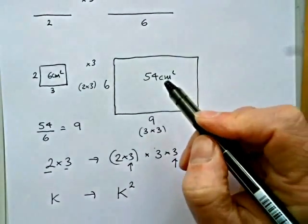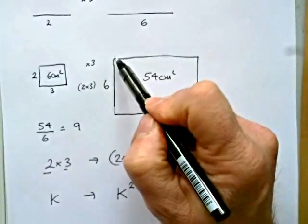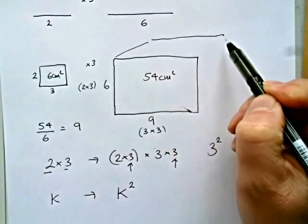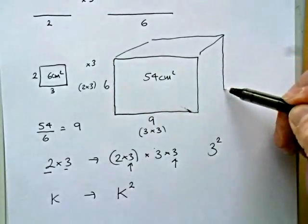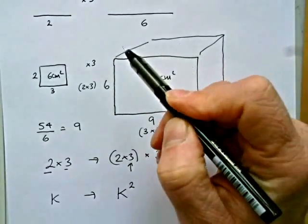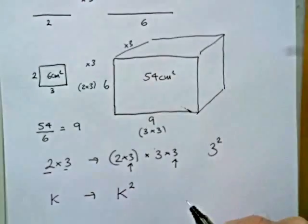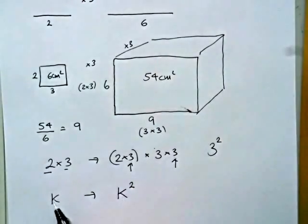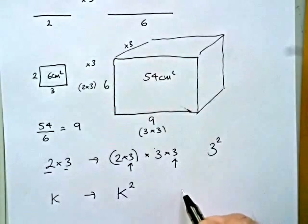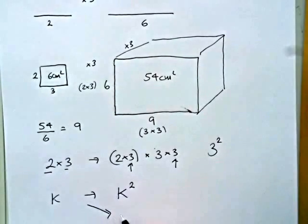Now in just the same way, if I'd gone to volume from length, then this would have brought in an additional factor of 3 on the depth. So volume, if we have an enlargement of k, will change by k cubed.